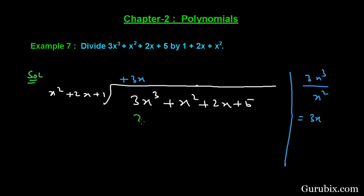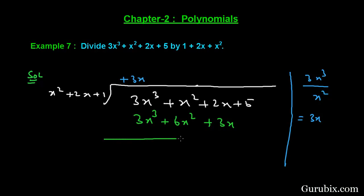Multiplying 3x by the divisor: 3x × x² = 3x³, 3x × 2x = 6x², and 3x × 1 = 3x. We write these results — 3x³, 6x², and 3x — and now we shall subtract.